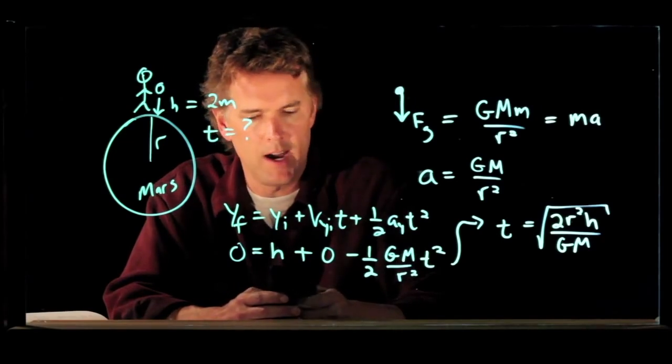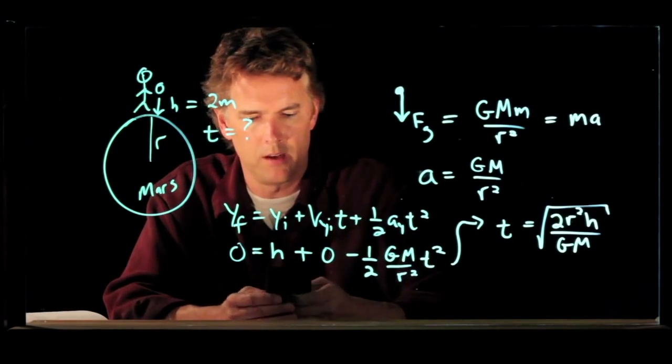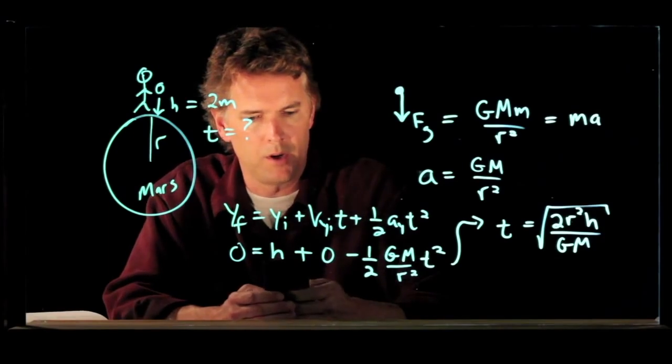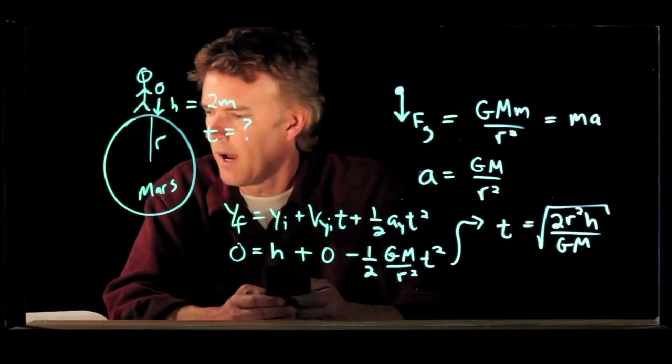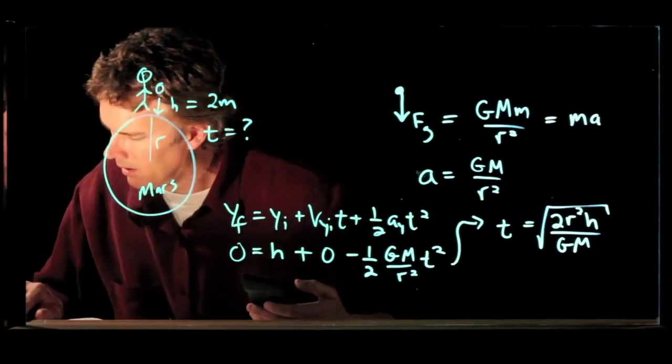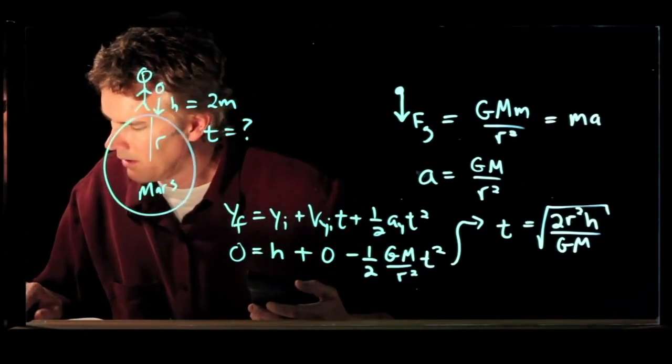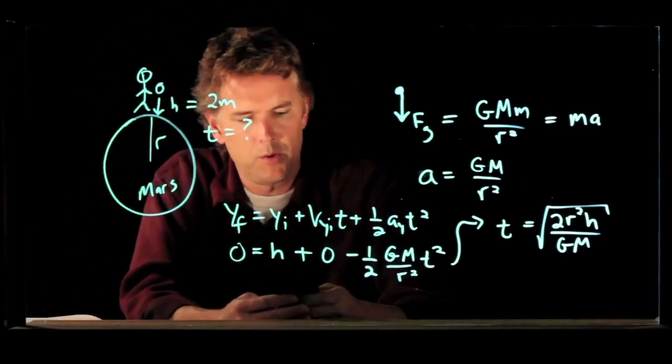And now we divide by universal constant, 6.67 times 10 to the minus 11. And we're going to also divide by mass of Mars, which is 6.42 times 10 to the 23.